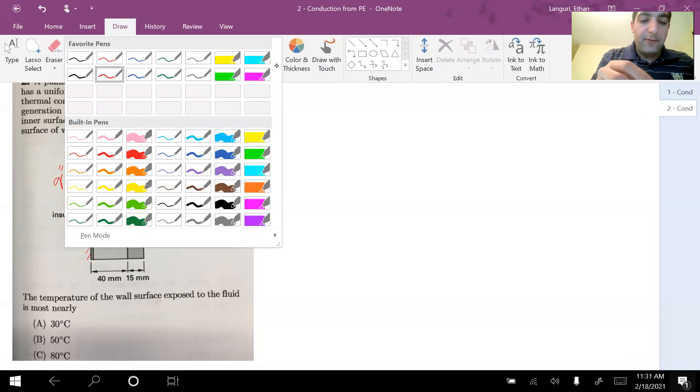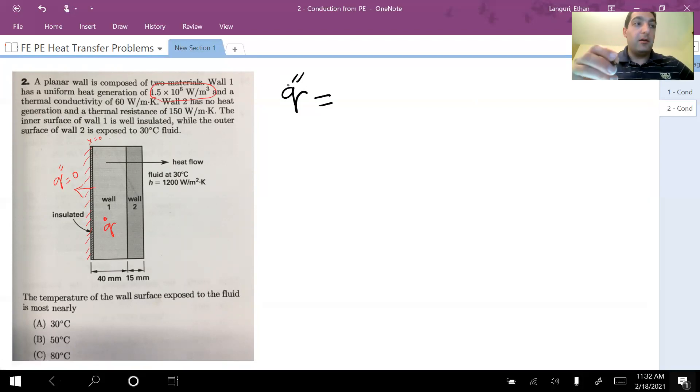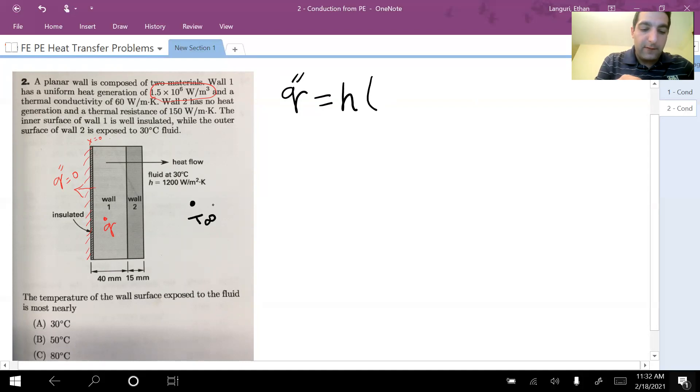We're going to use Newton's law of cooling. Heat flux, which is nothing but heat rate divided by area, is equal to h, the heat transfer coefficient, times delta T. In this case we know T infinity of the fluid is 30 degrees C and we are looking for the temperature of the wall surface exposed to the fluid. So let's call this T2. So T2 minus T infinity. That's Newton's law of cooling.